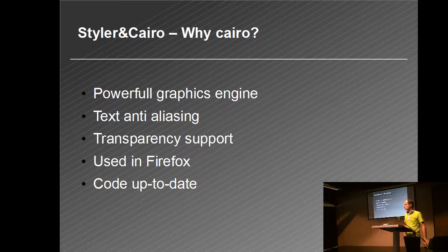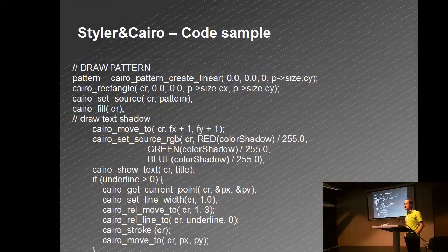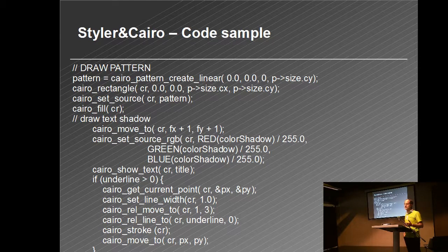Another reason to use Cairo is that it's quite easy to use. Looking at these two examples — one for drawing a pattern in a rectangle and one to draw some text — it's quite easy because it's a natural language function call. While OS/2 Presentation Manager uses very strange function names and requires strange things to draw, with Cairo it's quite simple: you draw a rectangle, you set a color, you fill it. When you know the available functions, it's easy to draw something new and add new things that are not available today.